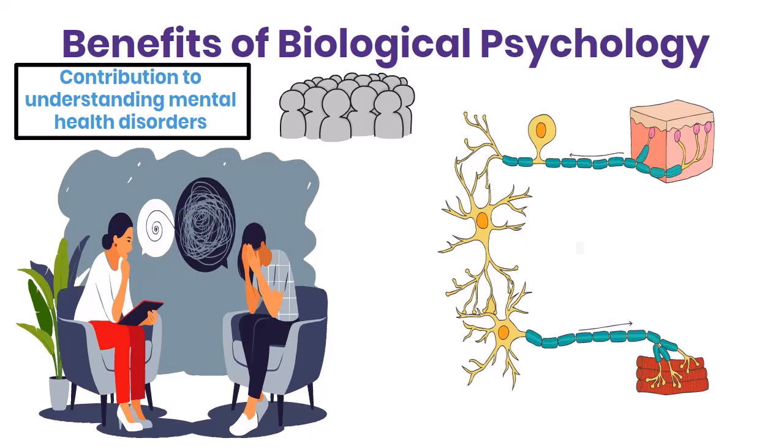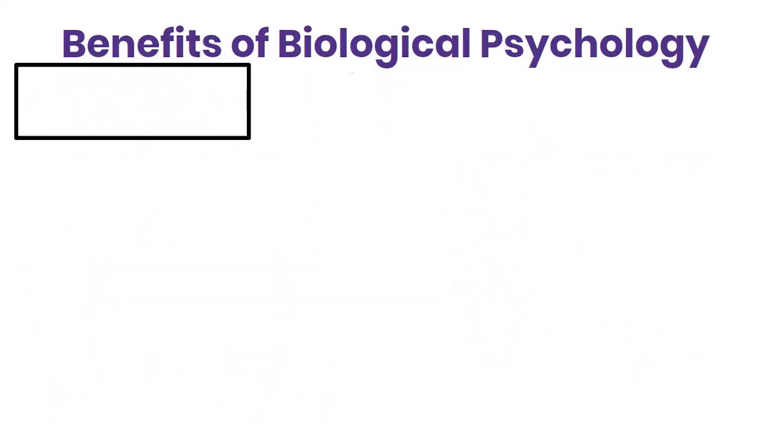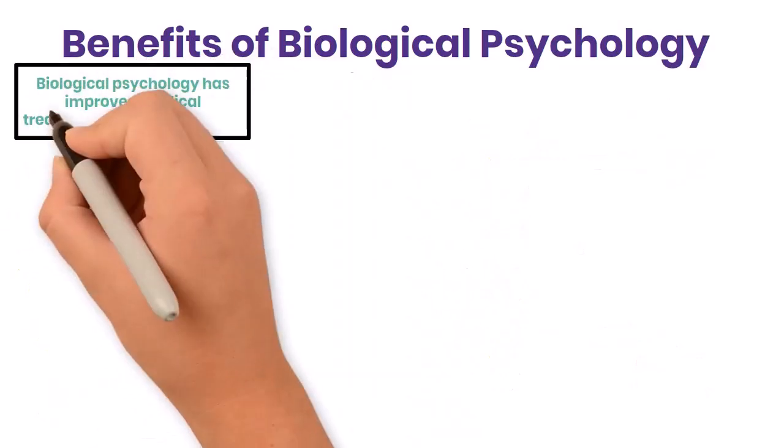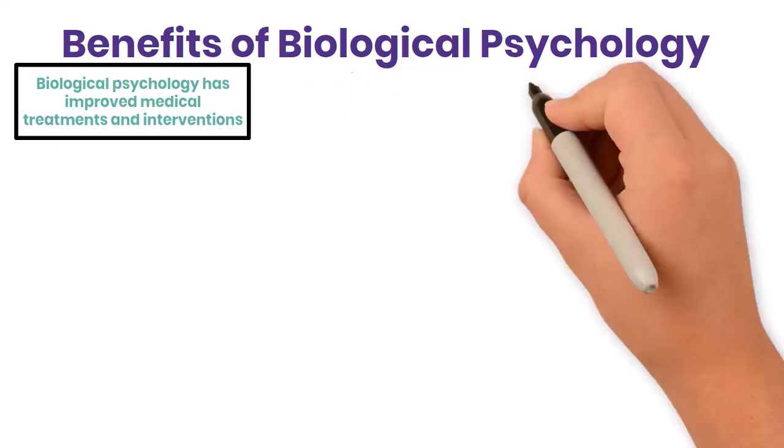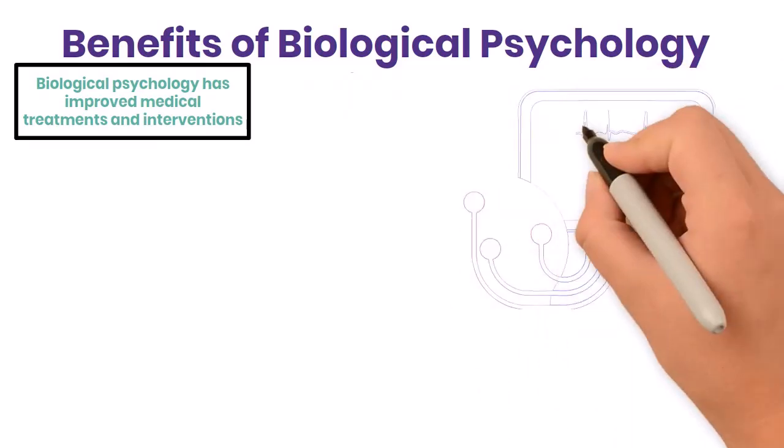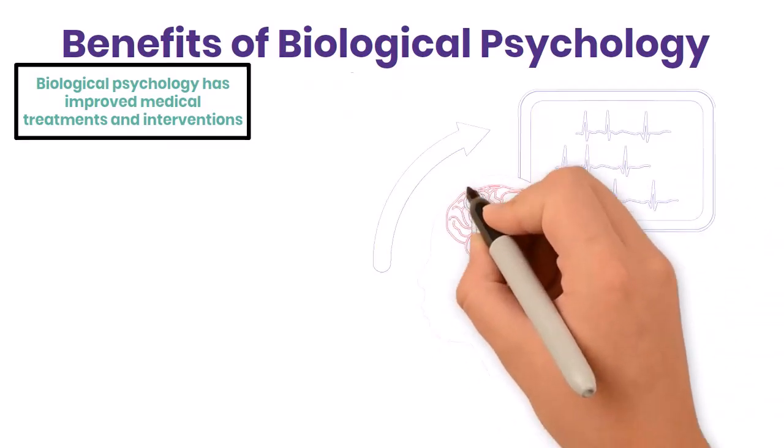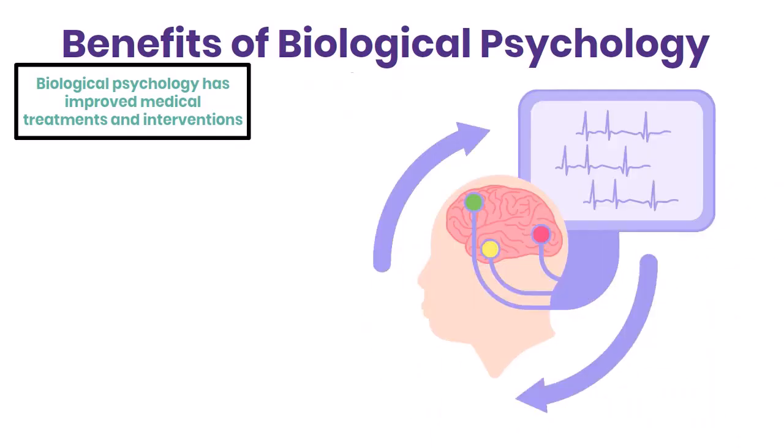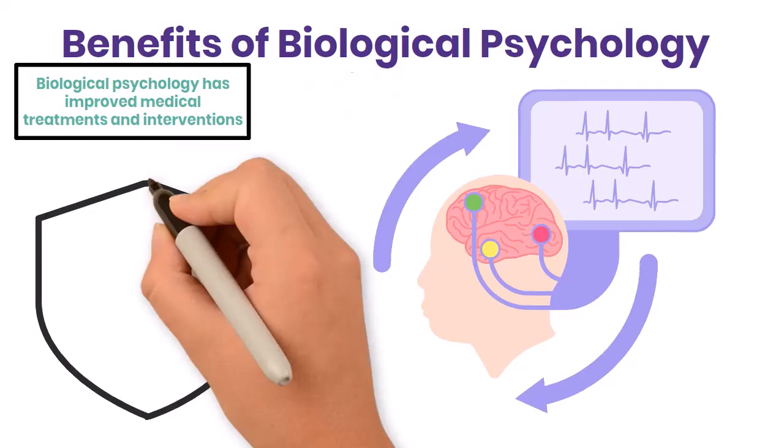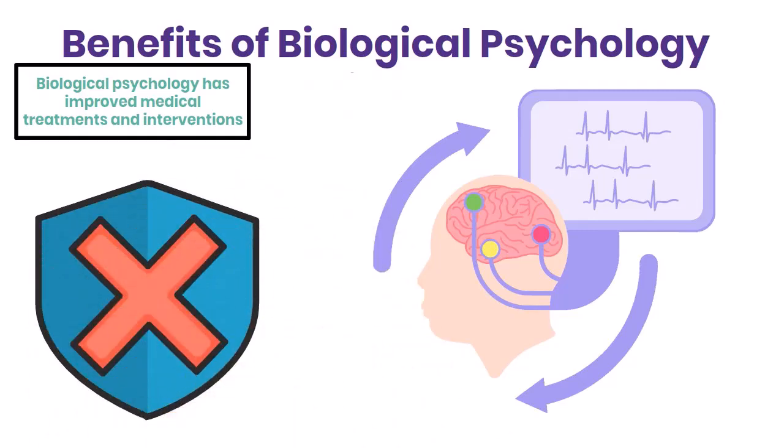Secondly, biological psychology has improved medical treatments and interventions. For instance, deep brain stimulation, a technique that involves implanting electrodes in the brain, has been used to treat conditions like Parkinson's disease and severe depression. This method would not have been possible without insights gained from biopsychological research.